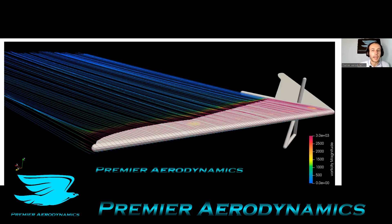This is a hang glider. Hang gliders are pretty much just this metal structure — tubing — with a plastic sheet over the top, and they're not really supposed to produce that much lift. It's just supposed to glide down slowly.